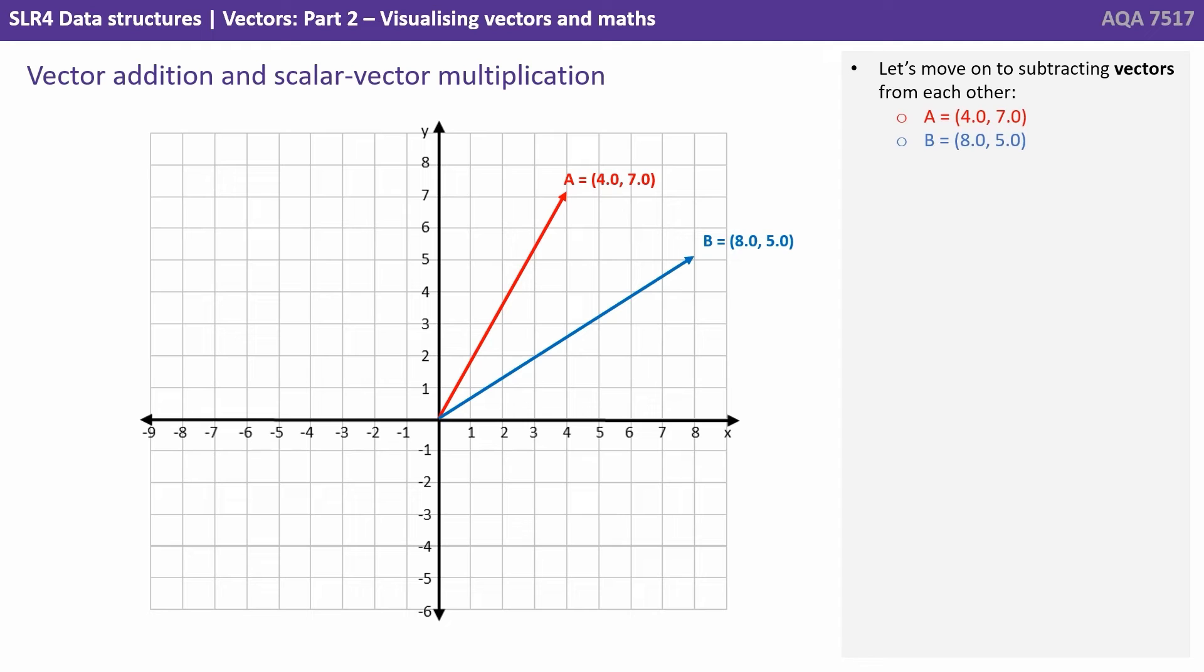Let's move on to subtracting vectors from each other. So here we've got vectors A and B. Vector C is the result of subtracting vector A from vector B. So we've got vector C now which is (4, -2.0) which was plotted as the purple dotted arrow.